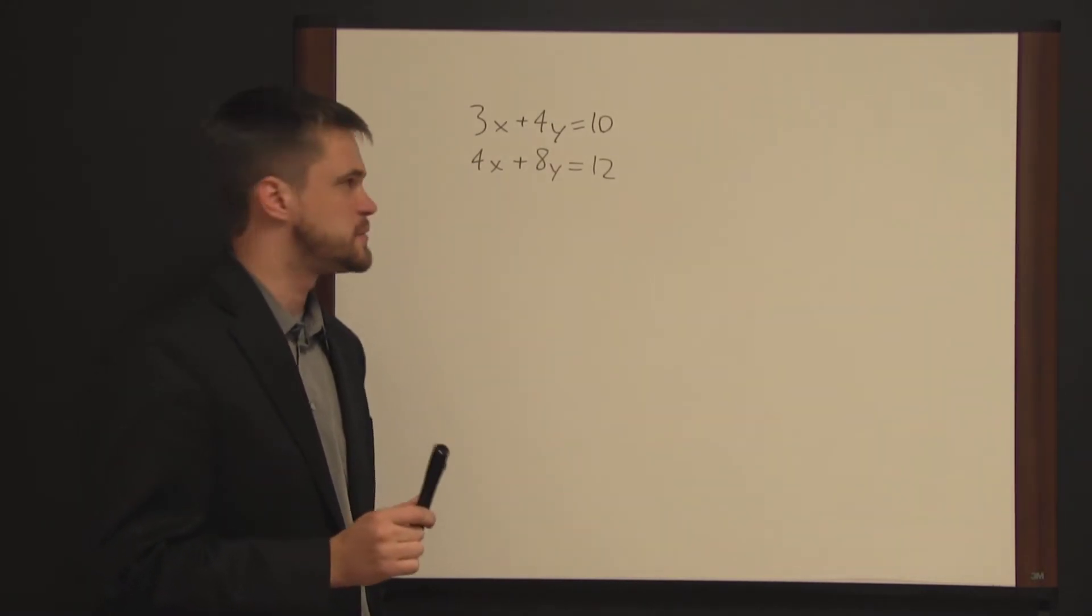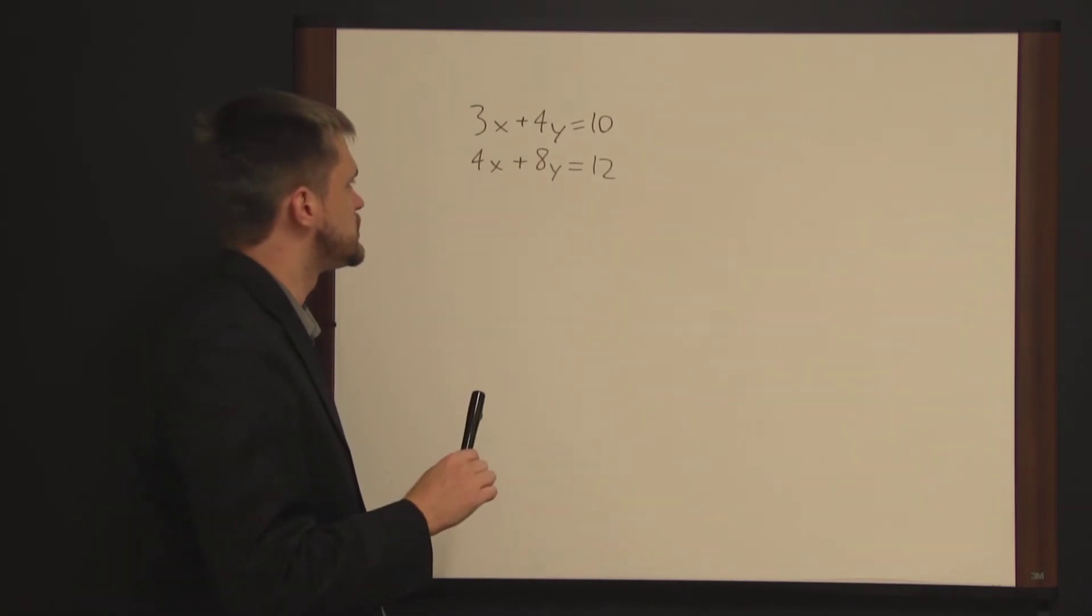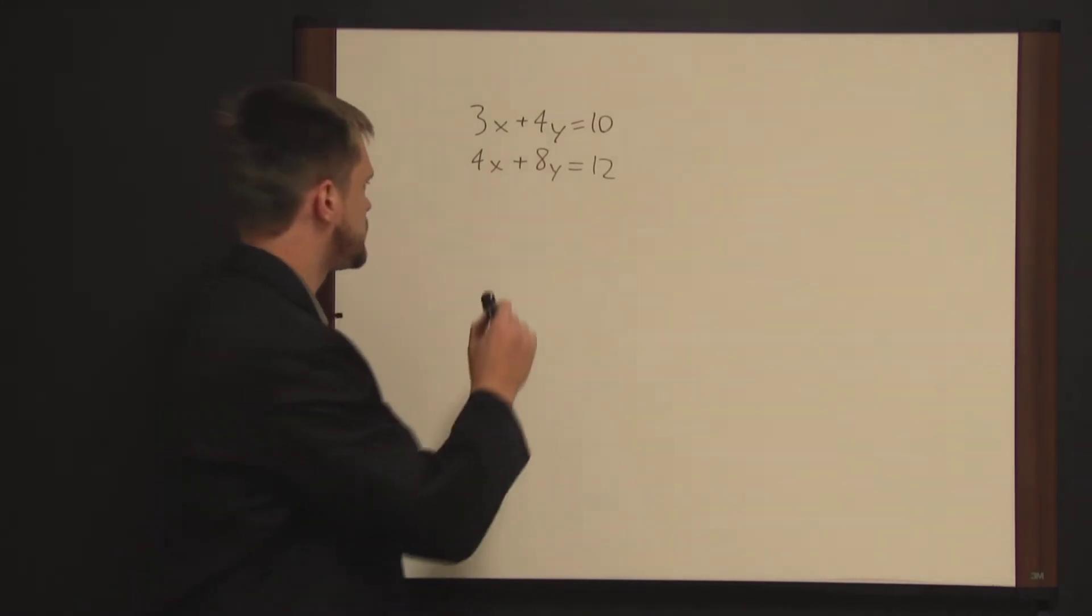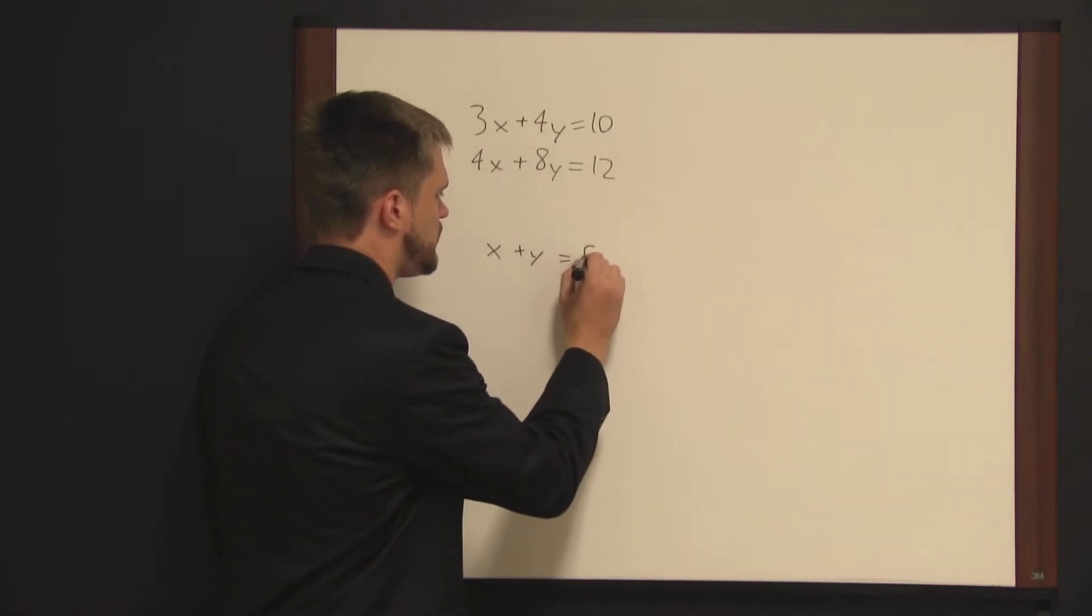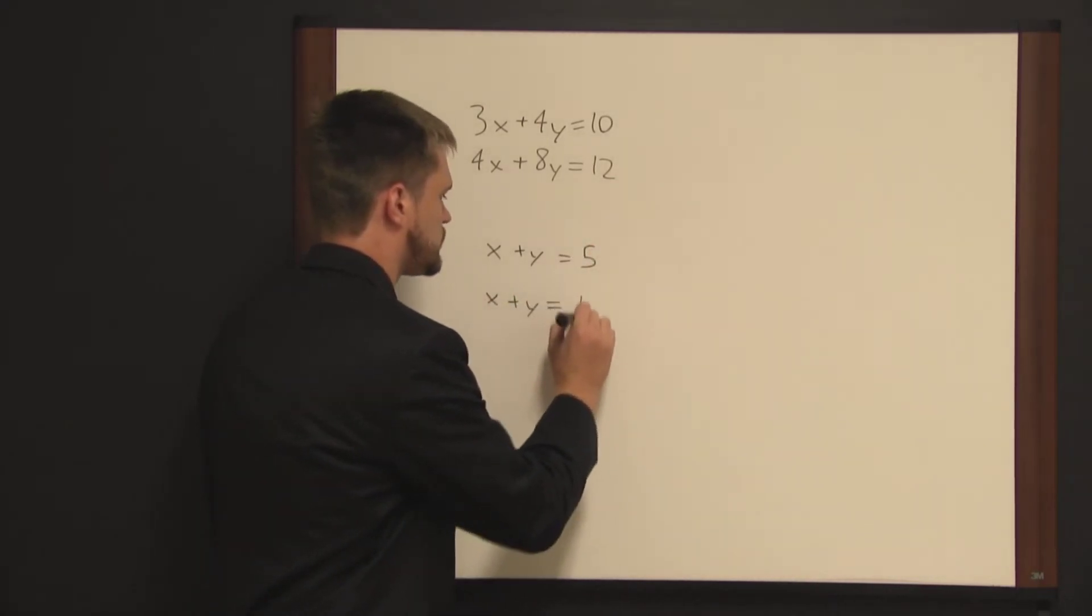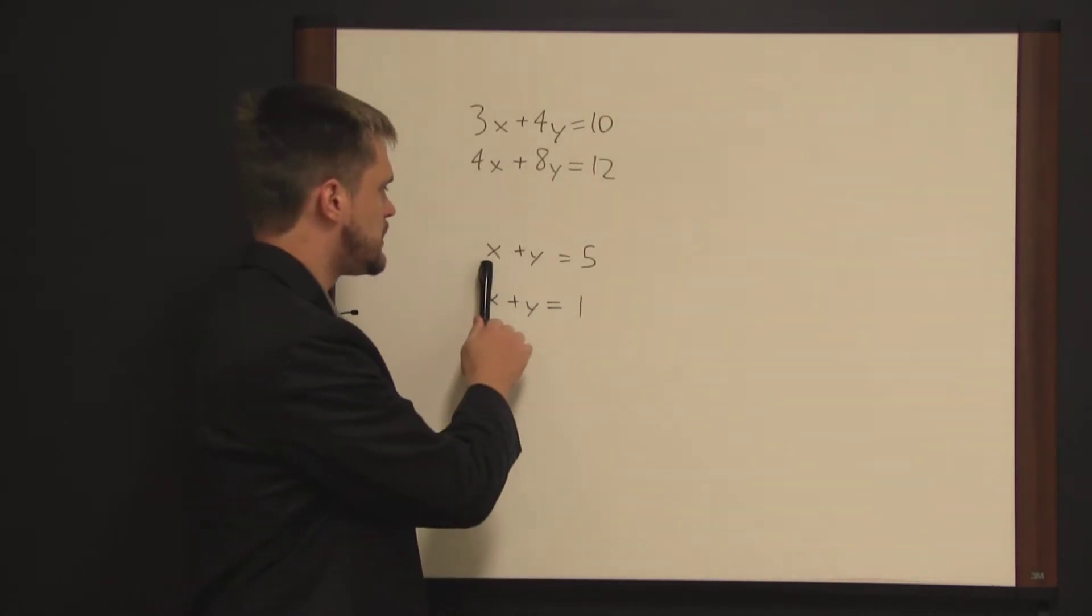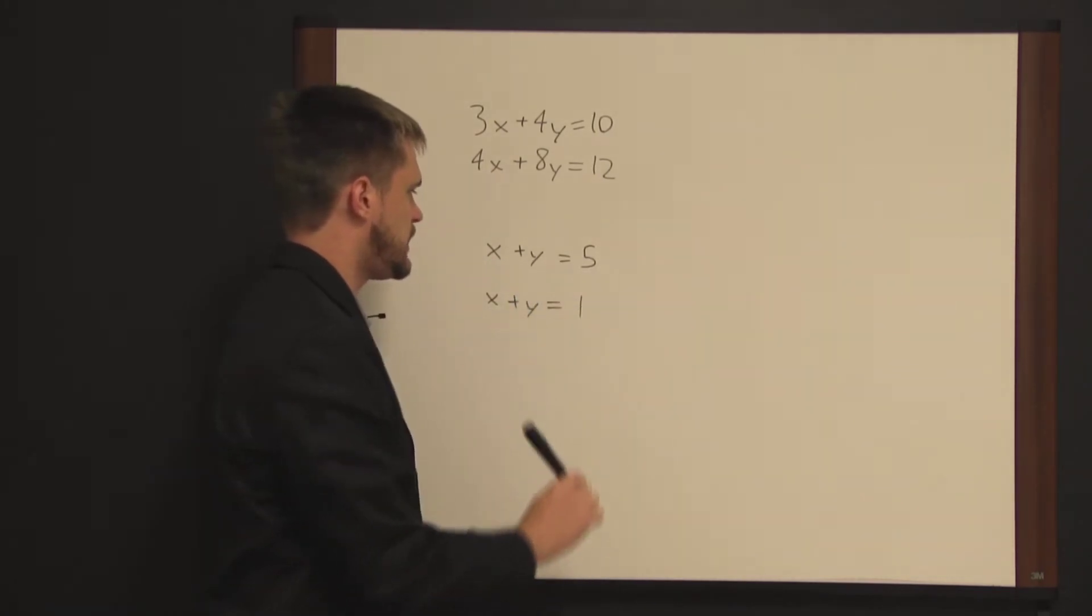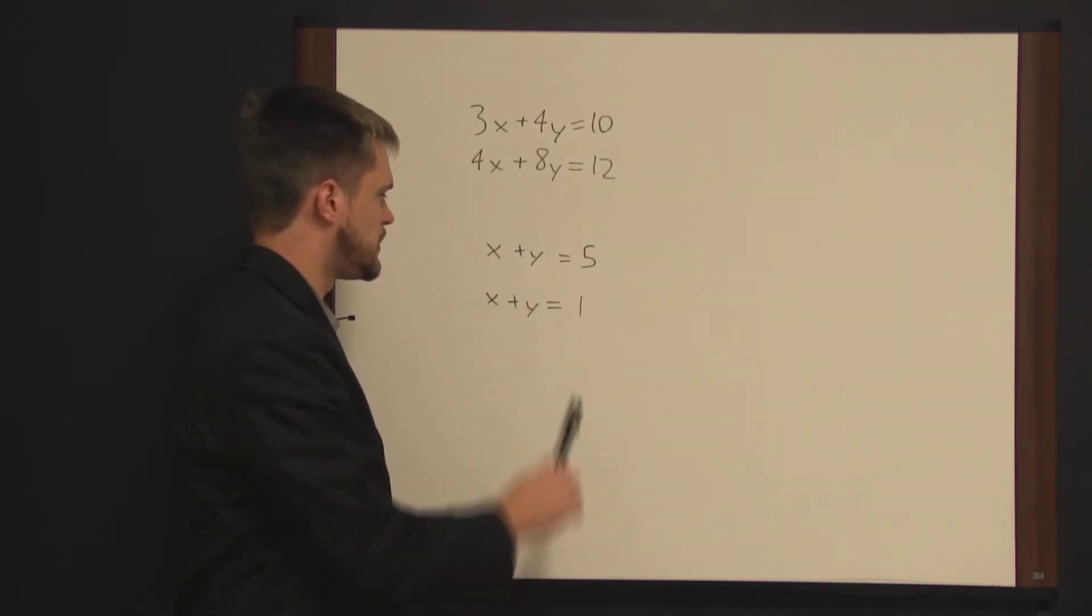Now, there are two exceptions to that rule. One is if the two equations are contradictory. For instance, if you had the system of equations x plus y equals 5 and x plus y equals 1, these two equations are contradictory because they're telling you that the same quantity, x plus y, is equal to two different things and this obviously can't be solved for values.